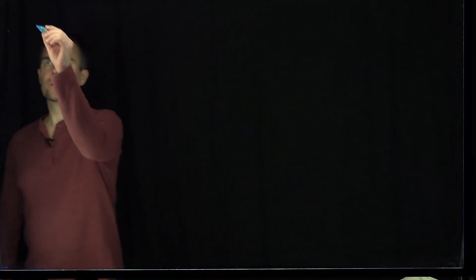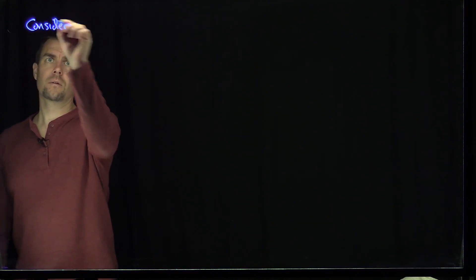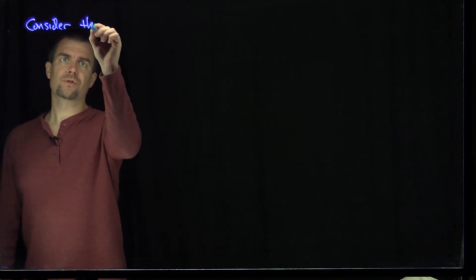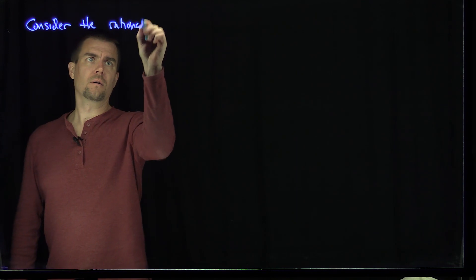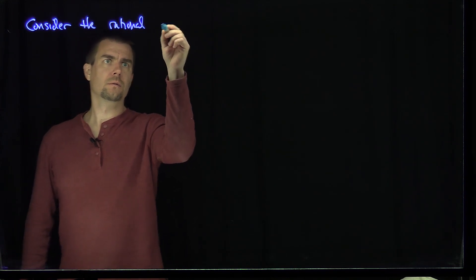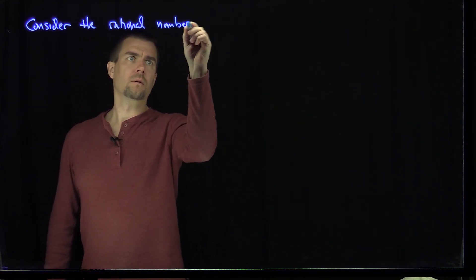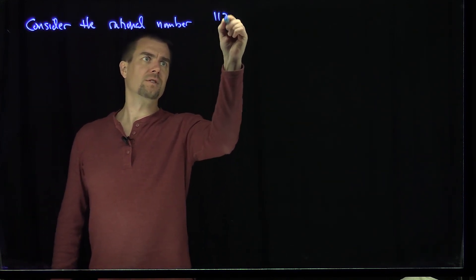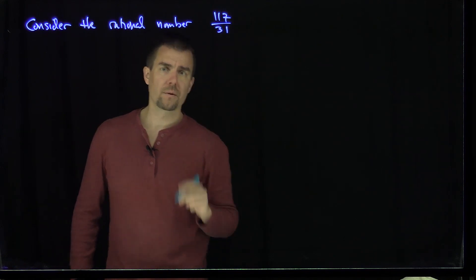Hello students. In this video we'll see an example of how the Euclidean algorithm for finding the greatest common divisor can be used to construct a simple continued fraction. Let's consider the rational number 117 over 31.